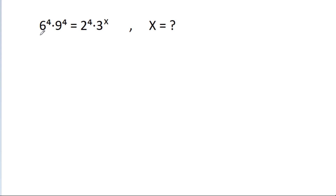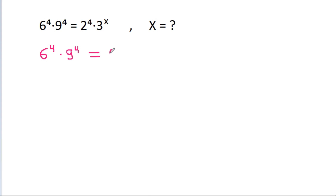We have given that 6 power 4 times 9 power 4 is equal to 2 power 4 times 3 power x. We have to find the value of x. So we have 6 power 4 times 9 power 4 is equal to 2 power 4 times 3 power x.